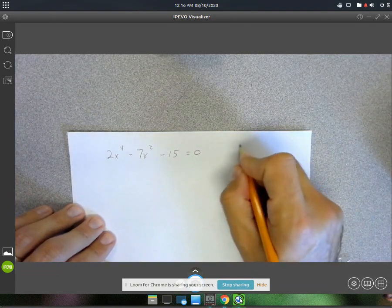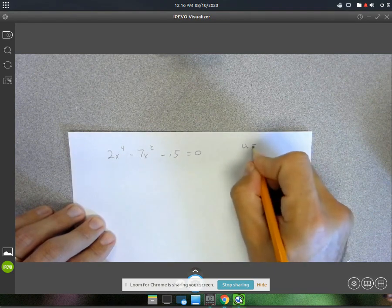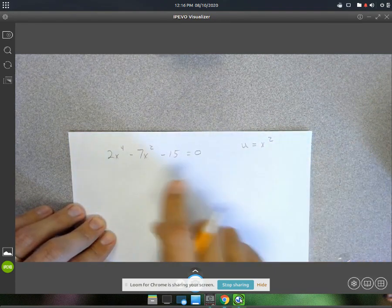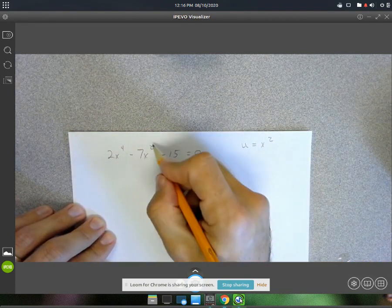So what we're going to do is we're going to have u equal x squared. It's just that term right there.